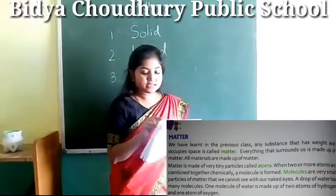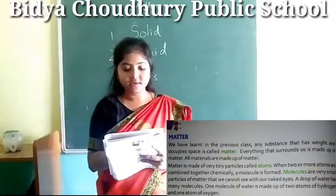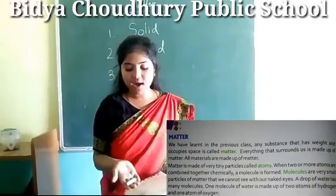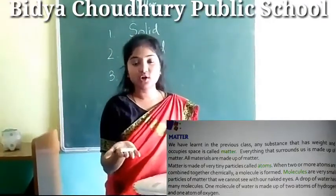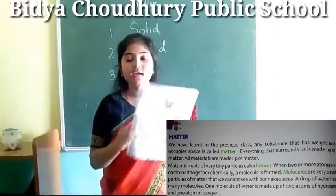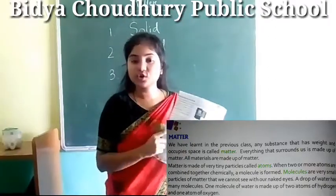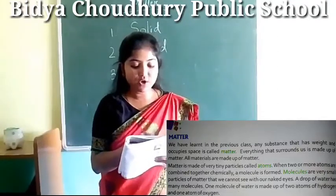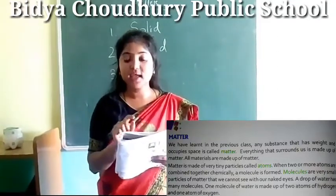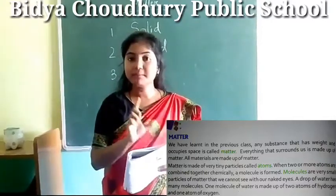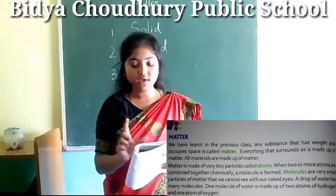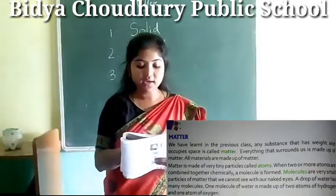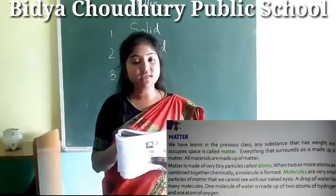Everything that surrounds us is made up of matter. All materials are made up of matter. If you are touching this chalk, it is also made up of matter. You are reading this book — this book is also made up of matter. Matter is made of very tiny particles called atoms. Matter is made up of atoms. When two or more atoms are combined together chemically, a molecule is formed.